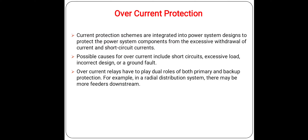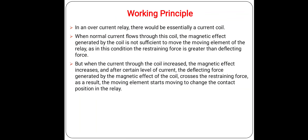Now, talking about the working principle of an overcurrent relay — in an overcurrent relay there is essentially a current coil, because the current coil measures the value of current. When the current value is less than the preset value, the relay does not operate. When normal current flows through this coil, the magnetic effect generated by the coil is not sufficient to move the moving element of the relay. In this condition, the restraining force is greater than the deflecting force.